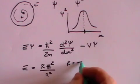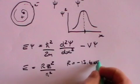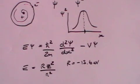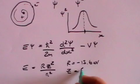R is minus 13.6 electron volts and z is the proton number.